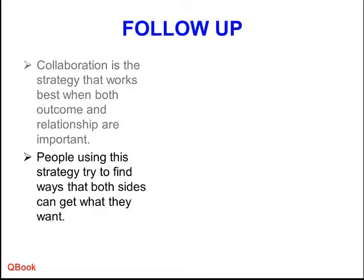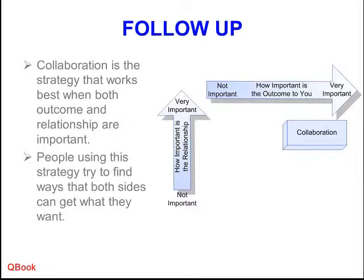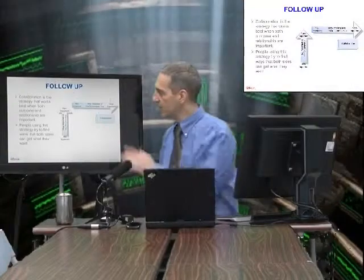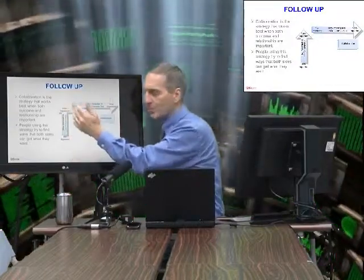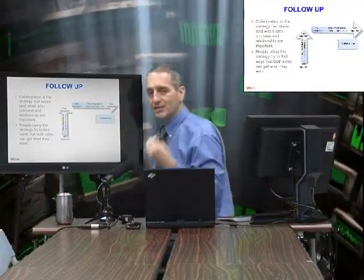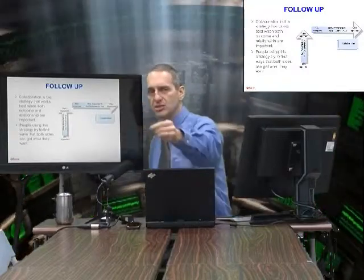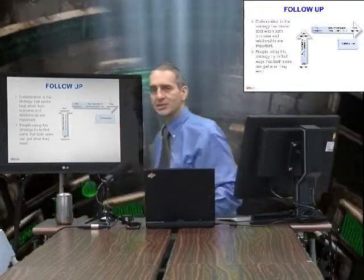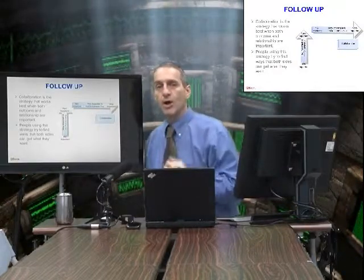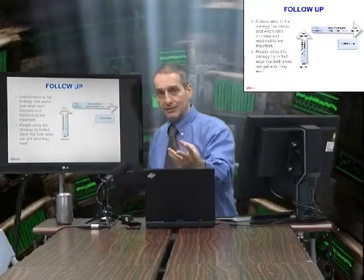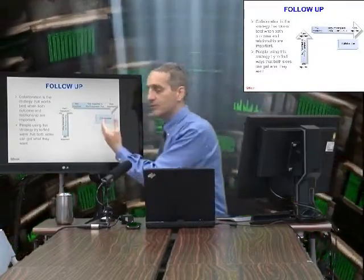Our final strategy is collaboration. Collaboration means we try to work together — we're doing things together. How does this answer the two questions? Do I need this relationship in the future? Yes, very important. Do I need this deal now? Yes, very important. So I collaborate — I give some things, I ask for some things. I try to get them to give me what I want, and I try to give them what they want. By giving them what they want and them giving me what I want, we can both get what we want. That's collaboration.